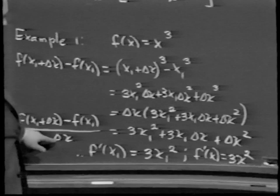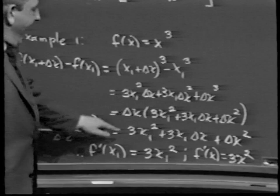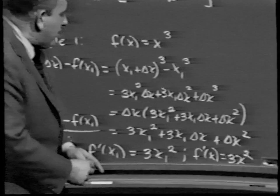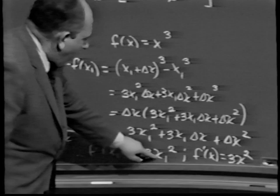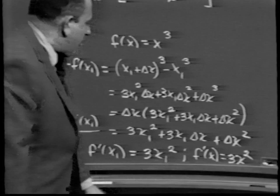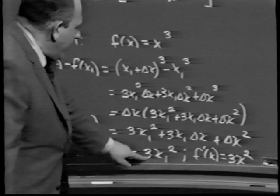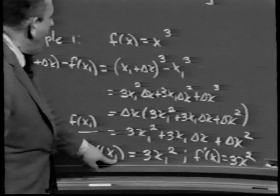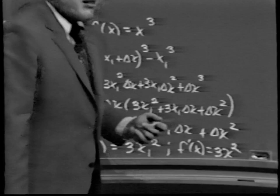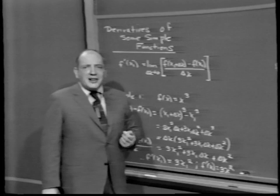To find f prime of x₁, we take the limit as delta x approaches 0. The limit of a sum is the sum of the limits; the limit of a product is the product of the limits. The first term, not depending on delta x, has limit 3x₁ squared. Each remaining term has a factor of delta x, so as delta x goes to 0 they go to 0. Therefore f prime of x₁ is 3x₁ squared. Since x₁ could have been any real number, if f of x equals x cubed, then f prime of x is 3x squared.